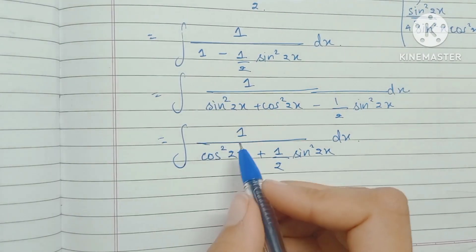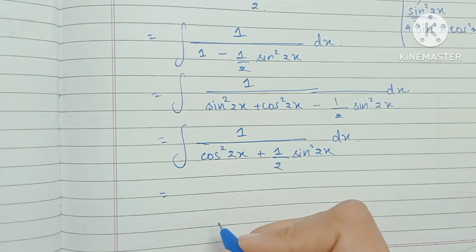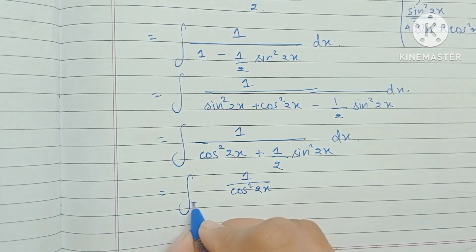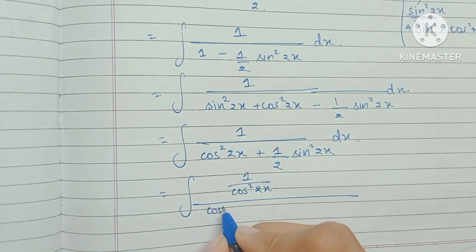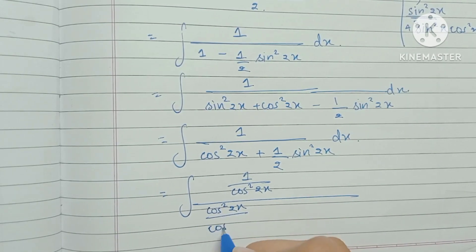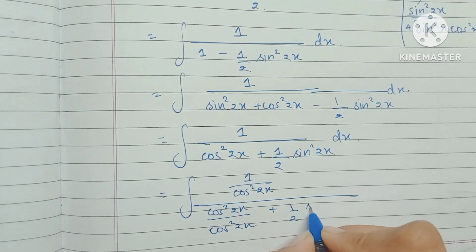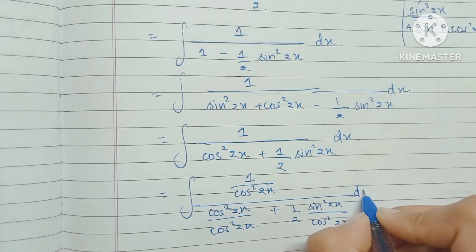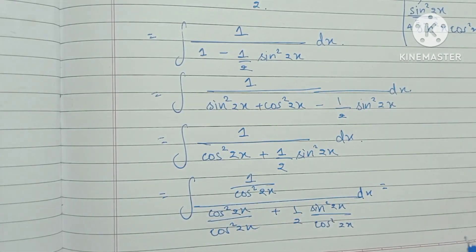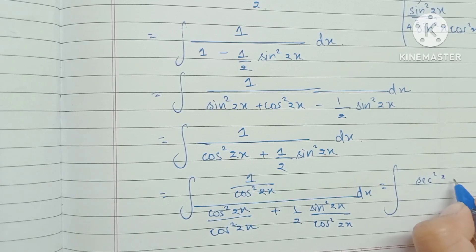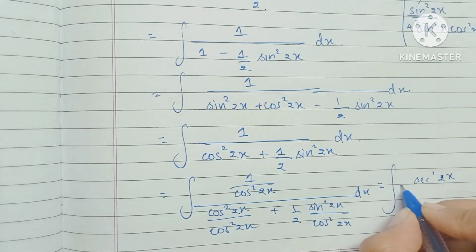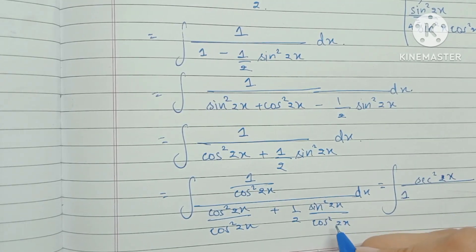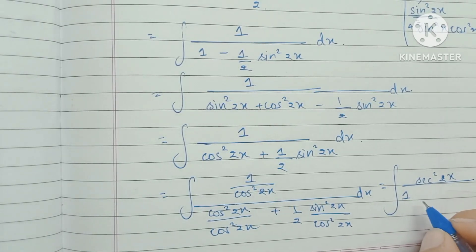Now we are going to divide the numerator and the denominator by cos²2x. So we have 1 upon: cos²2x/cos²2x plus (1/2)·sin²2x/cos²2x. Now 1/cos²2x can be written as sec²2x; cos²2x/cos²2x becomes 1; and sin²2x/cos²2x becomes tan²2x.